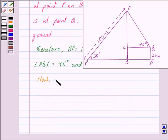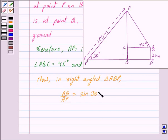Now in right angled triangle ABP, we have AB upon AP is equal to sin 30 degrees. Because we know that sin theta equals perpendicular upon hypotenuse. In this triangle ABP, perpendicular is AB and hypotenuse is AP. So we get AB upon AP is equal to sin 30 degrees.